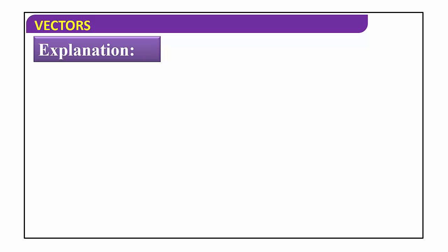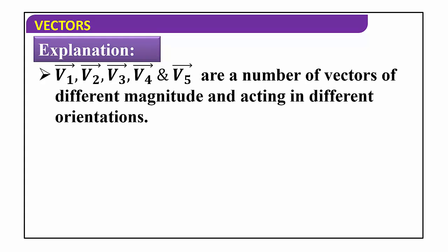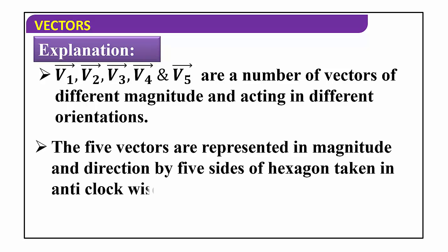Let me explain the polygon law further. Here we considered vectors v1, v2, v3, v4, and v5 — a number of vectors of different magnitudes acting in different orientations. For example, the first vector may have value 5 units, second vector 3 units, third vector 10 units, and so on. All vectors have different magnitudes and different directions. These 5 vectors are represented in magnitude and direction by the sides of a hexagon — hexagon having 6 sides.